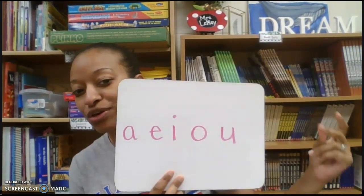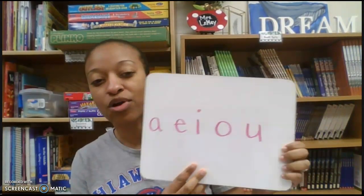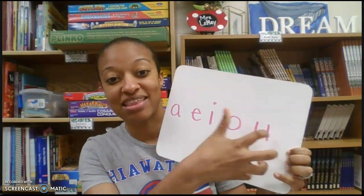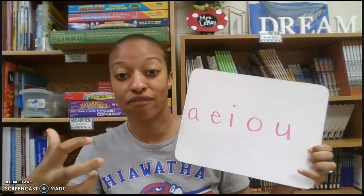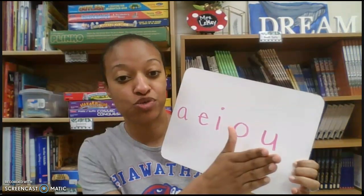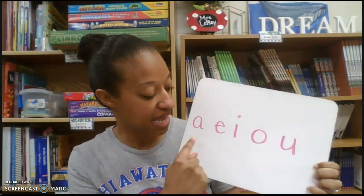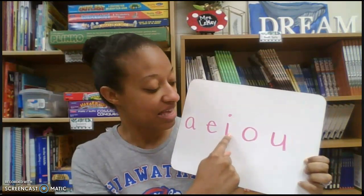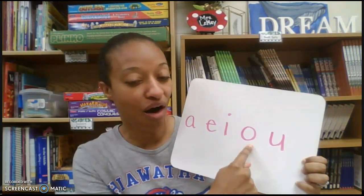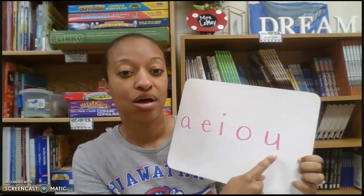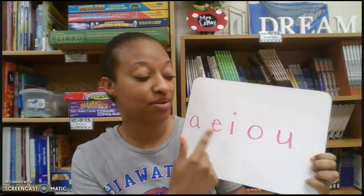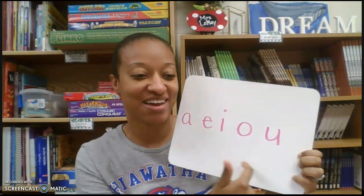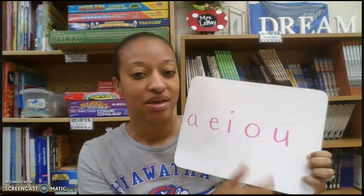A-E-I-O-U. Remember, our vowels make short vowel sounds and they make long vowel sounds. What are my short vowel sounds? A-E-I-O-U. What are my long vowel sounds? A-E-I-O-U.